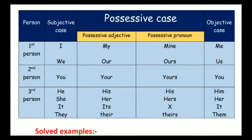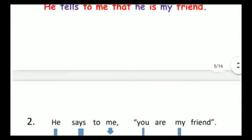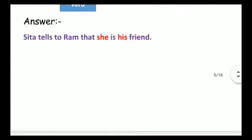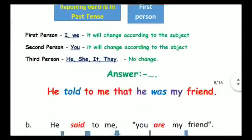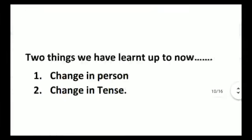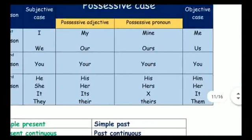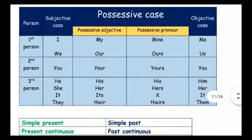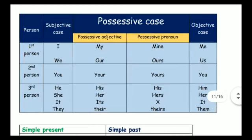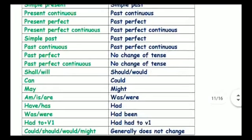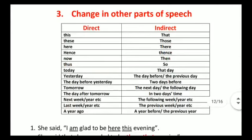These are the important things you have to study: change in person, change in tense, and other parts of speech, which is really important for changing from direct to indirect speech — the possessive change in person table, change in tense table, and change in other parts of speech.